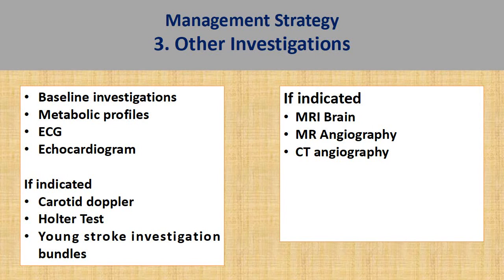Last and most importantly, all patients in the young stroke category must be properly worked up. More advanced imaging such as MRI brain, MR angiography, or CT angiography will be more relevant for subjects who might need to undergo thrombolysis or thrombectomy during acute presentation.